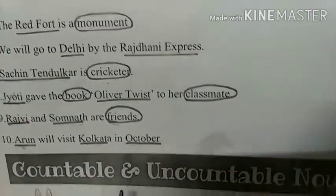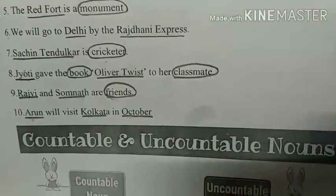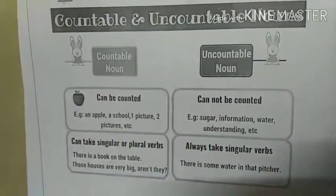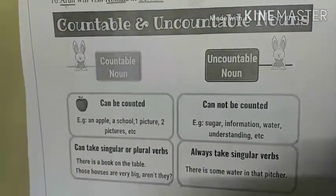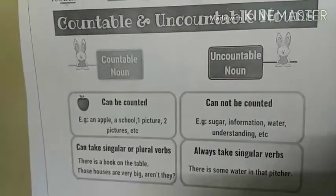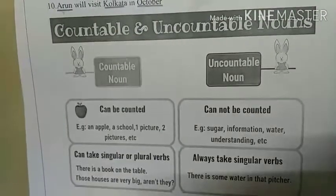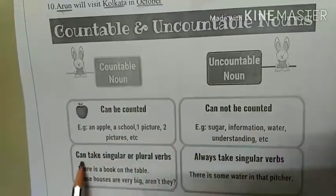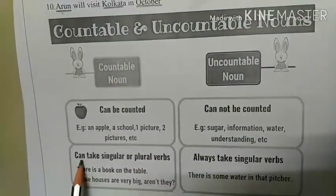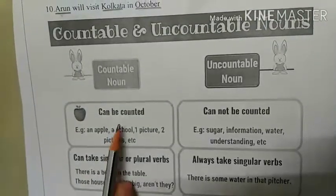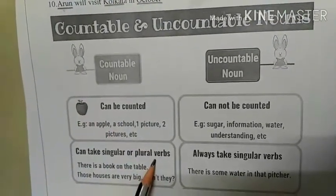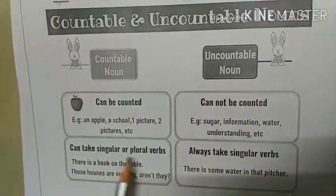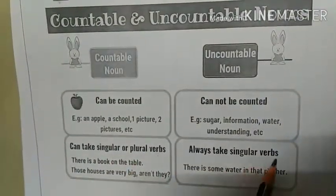Now we are going to learn about countable nouns and uncountable nouns. What do you mean by countable nouns? Those which we can count. And uncountable nouns are those which we cannot count. In English: countable nouns can be counted, uncountable nouns cannot be counted. Countable nouns can take both singular and plural verbs, whereas uncountable nouns always take only a singular verb.